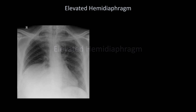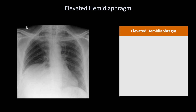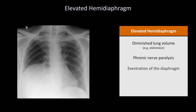Let me move away from the pleura and talk about the diaphragm, specifically the finding of an elevated hemidiaphragm. There are a number of reasons this can occur: diminished lung volume, phrenic nerve paralysis, eventration — which is an abnormal contour of the diaphragmatic dome due to incomplete muscularization — also a subphrenic abscess, or hepatomegaly or splenomegaly.